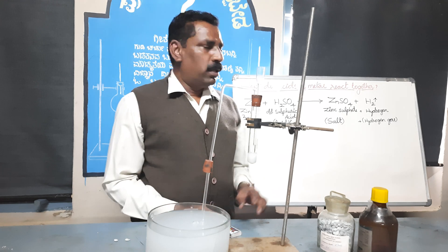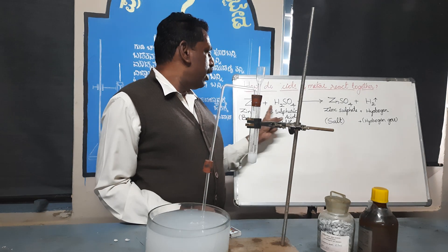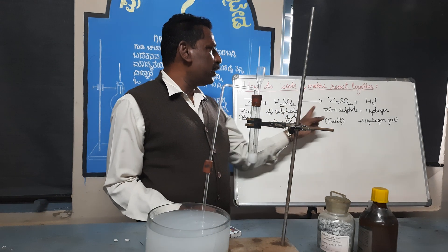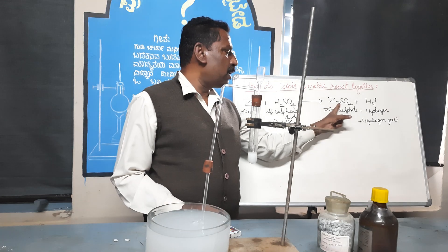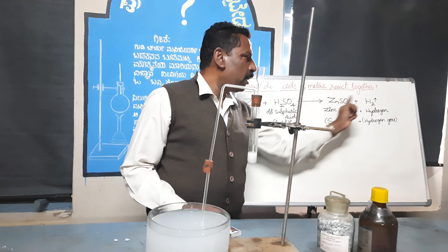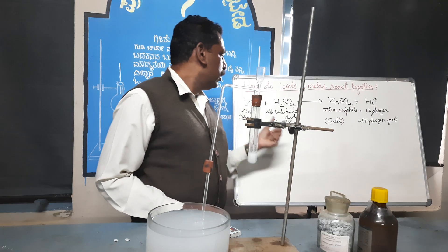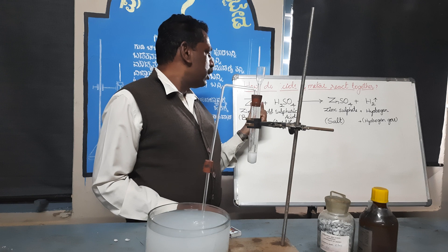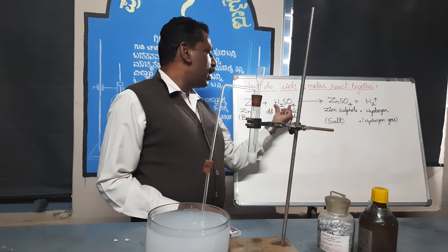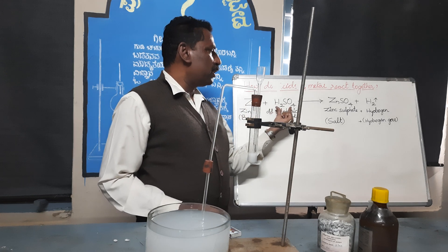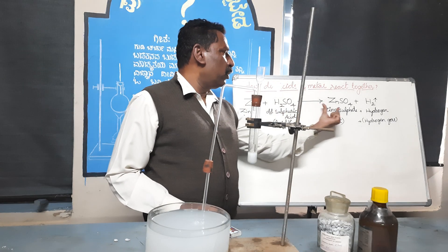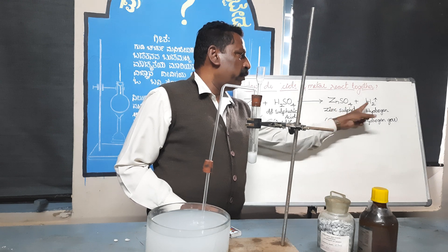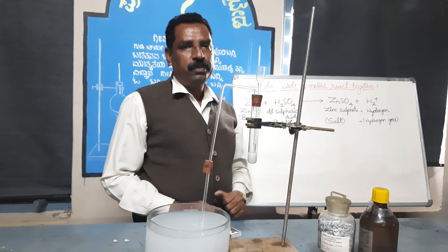The reaction is: zinc reacts with dilute sulfuric acid to form zinc sulfate and liberates hydrogen. In symbols: Zn + H₂SO₄ gives ZnSO₄ and H₂.